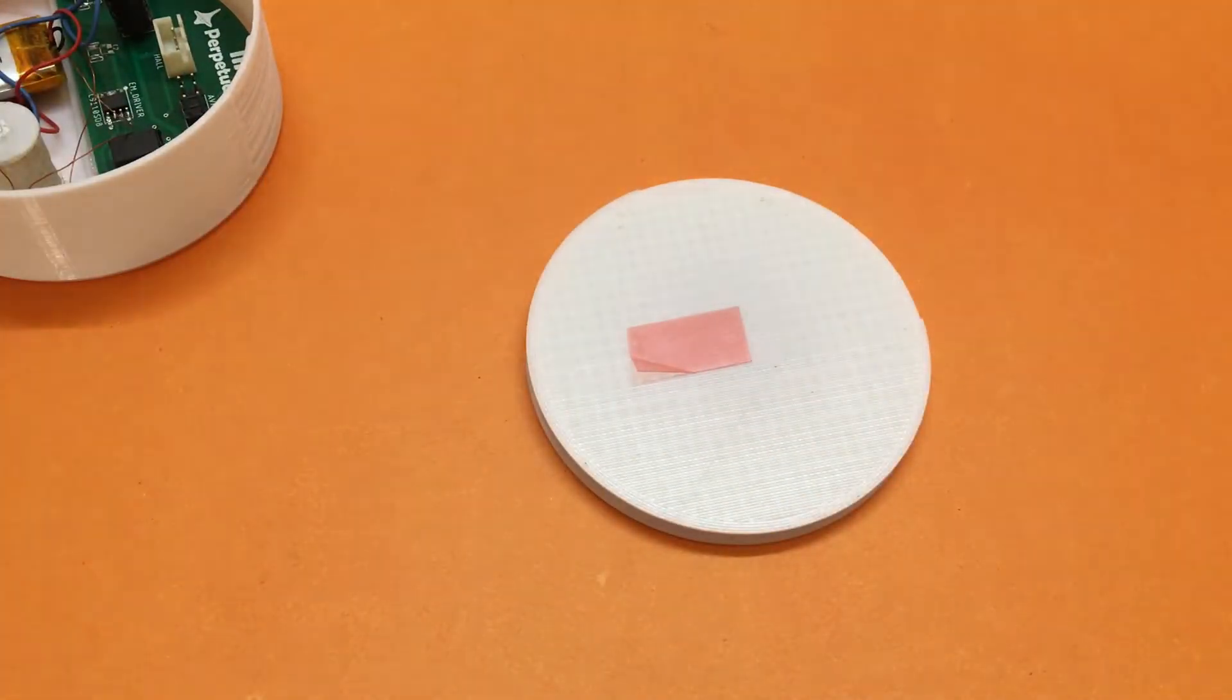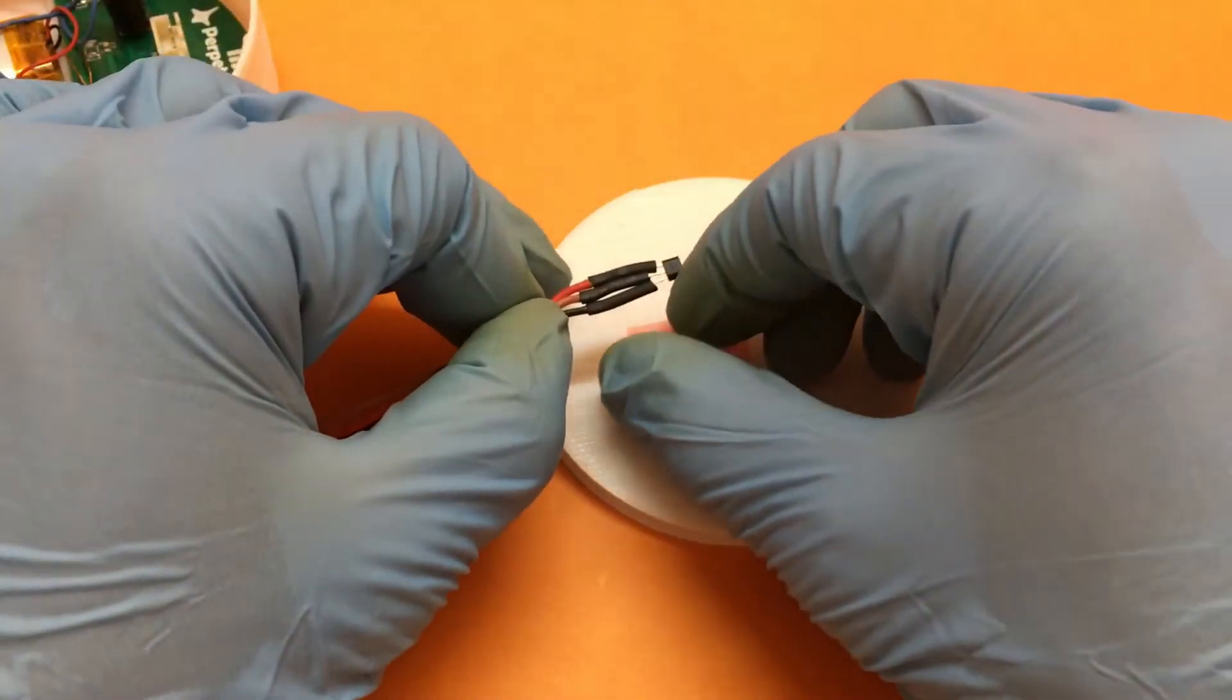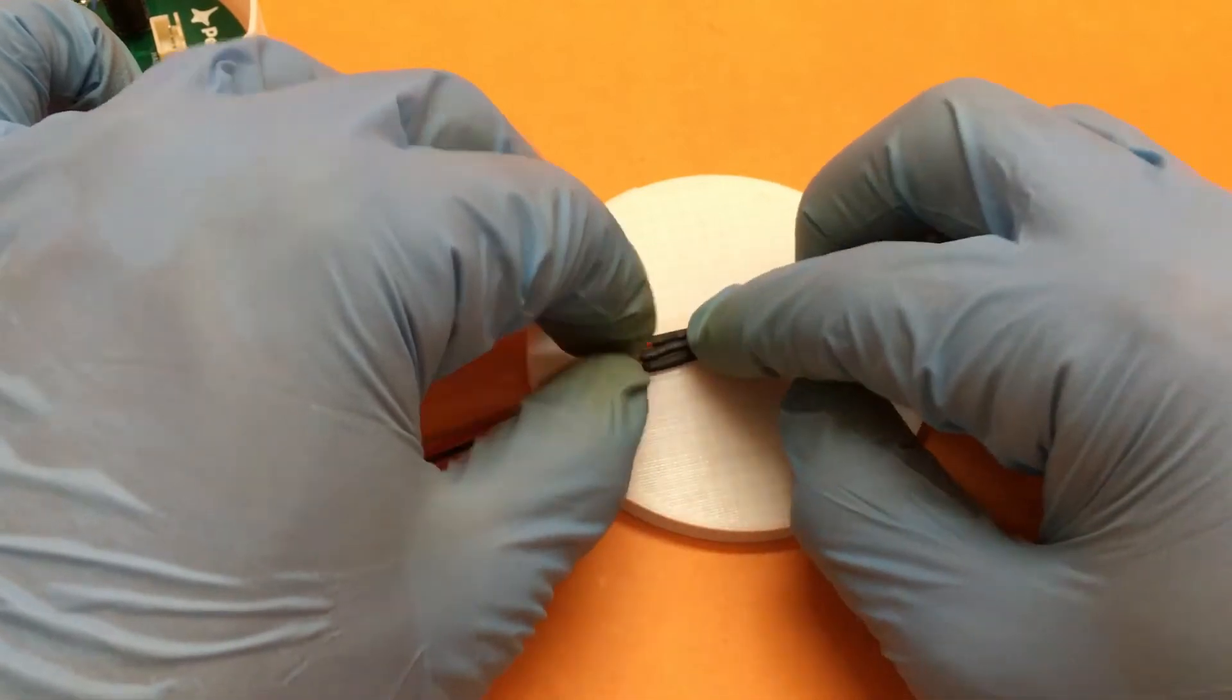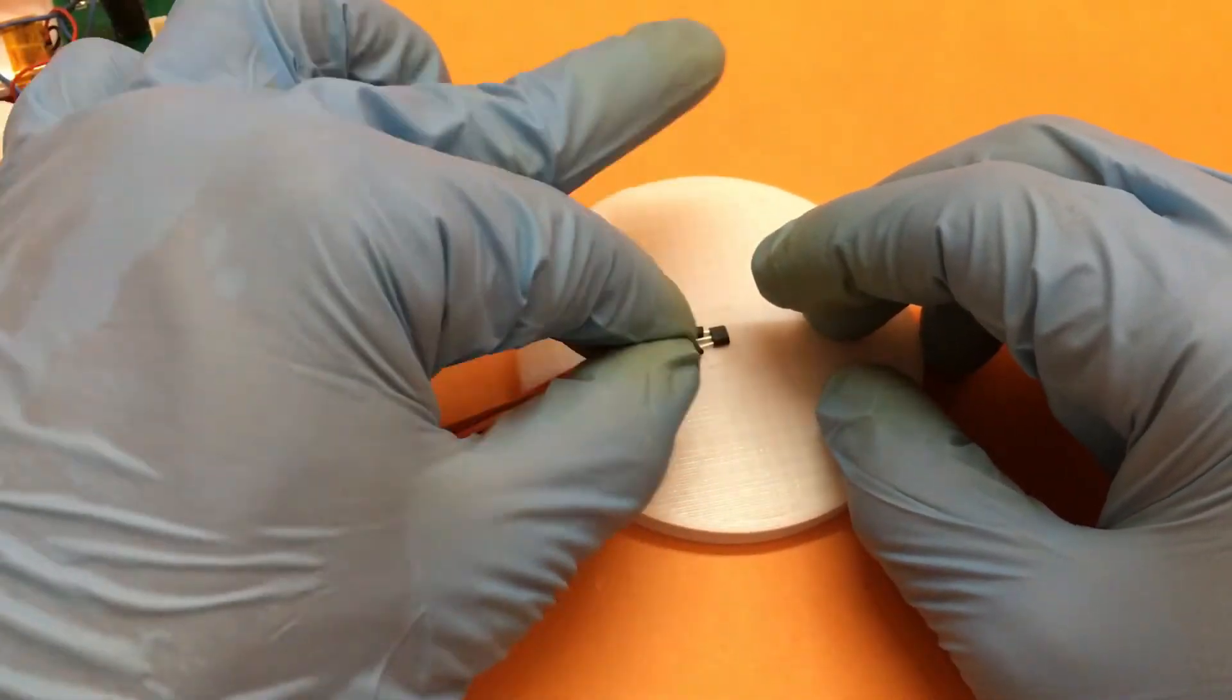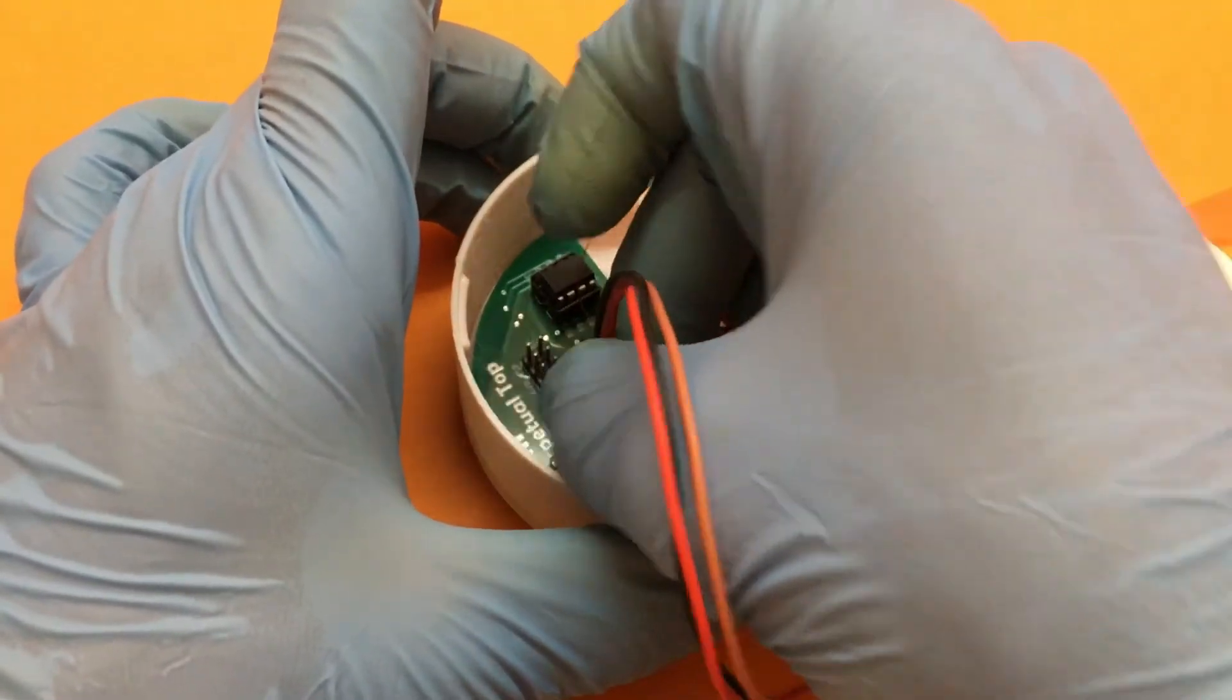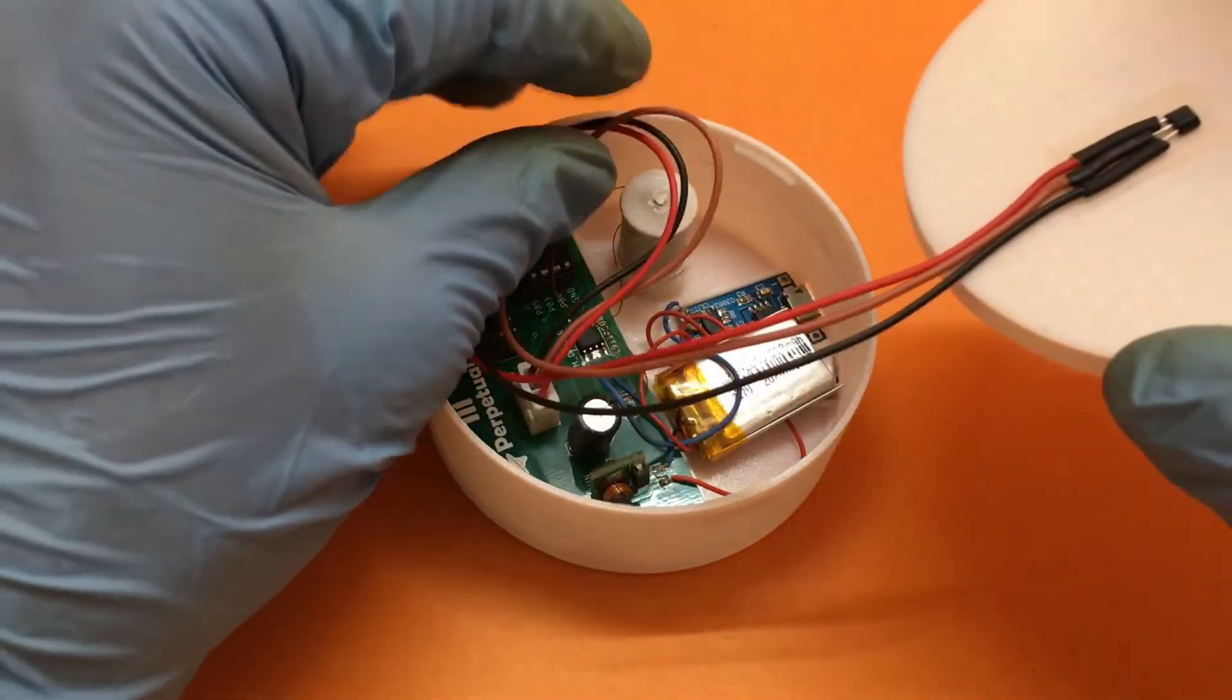We'll place the Hall effect sensor at the center of the top part. Then we can attach the JST connector to the PCB and close the lid.